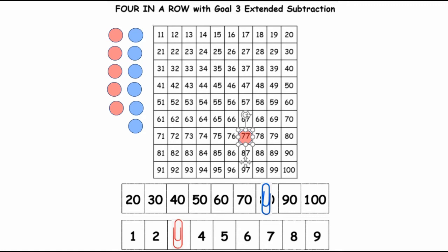then he decides he wants to move the blue paper clip to 100, and he says 100 minus 3 is 97. And so he puts his blue counter at 97, and now that can't be used anymore.